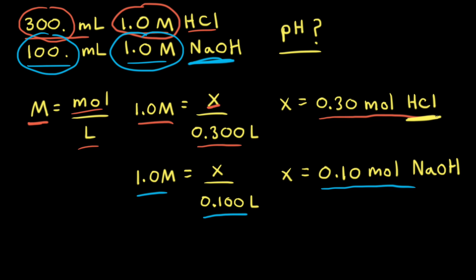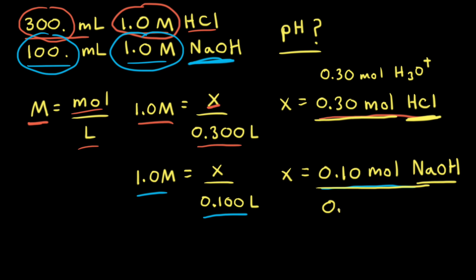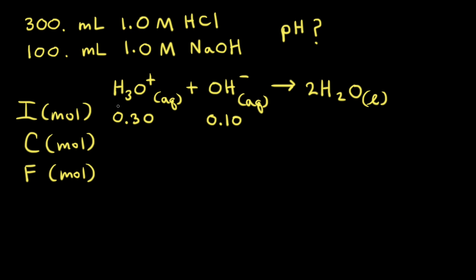Since HCl is a strong acid that ionizes 100%, 0.30 moles of HCl gives us 0.30 moles of H⁺, or 0.30 moles of hydronium ions, H₃O⁺. Since sodium hydroxide is a strong base that dissociates 100%, 0.10 moles of NaOH gives us 0.10 moles of sodium ions and 0.10 moles of hydroxide ions, OH⁻. Thinking about our net ionic equation, the 0.30 moles of hydronium ions will react with the 0.10 moles of hydroxide ions: H₃O⁺ + OH⁻ → 2H₂O. We'll use another ICF table to find the pH.